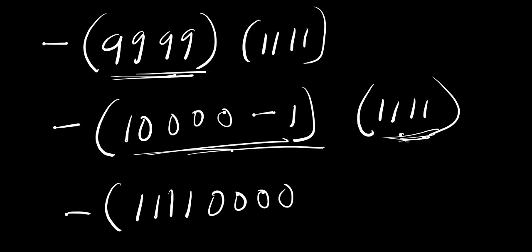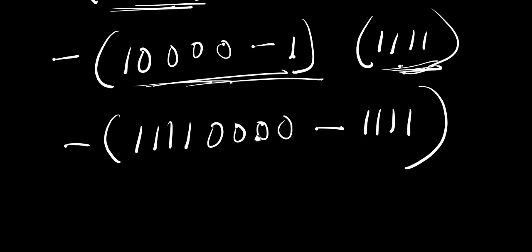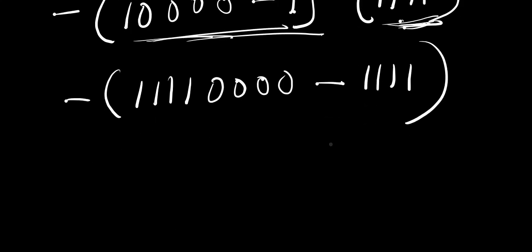So that is the answer for this times 10000. Then we have minus, multiply this by this one, you are going to have 1111. So the next thing you are going to do is to subtract this value from what we have here.